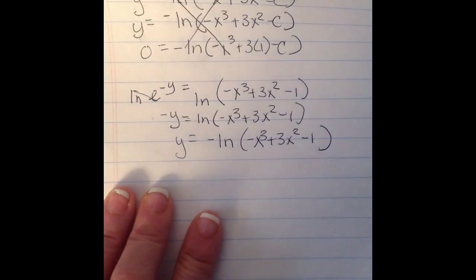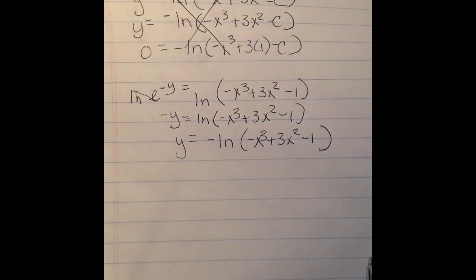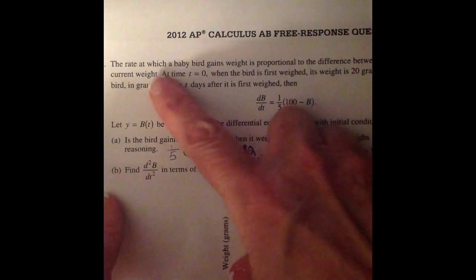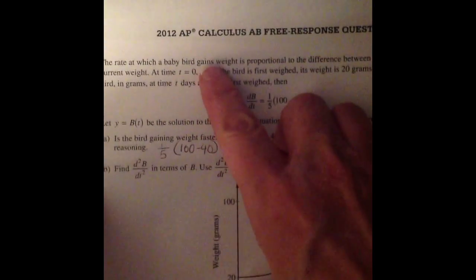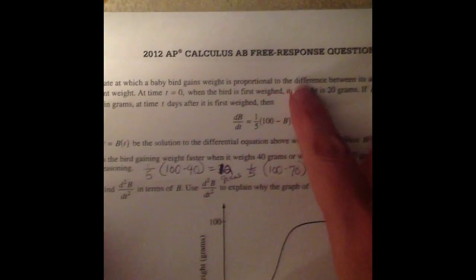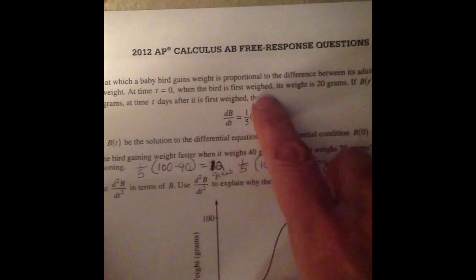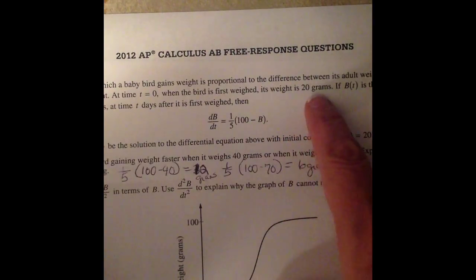Now think about that's 9 points on a free response on 2 questions that were relatively easy. So let's look at another example. We've got the rate at which a baby bird gains weight is proportional to the difference between its adult weight and its current weight. At time t = 0, when the bird is first weighed, its weight is 20 grams.